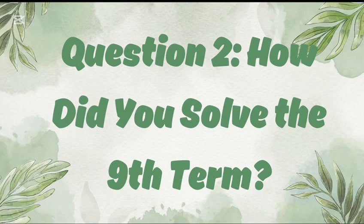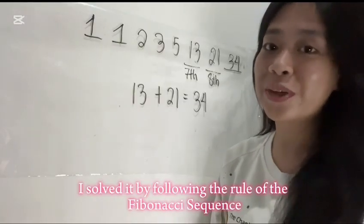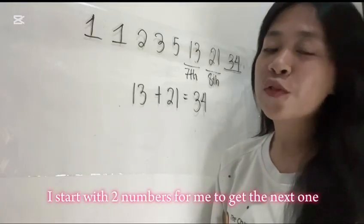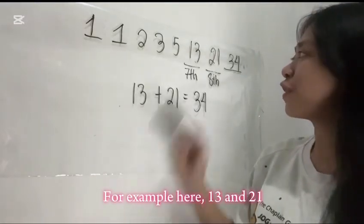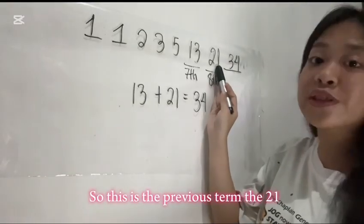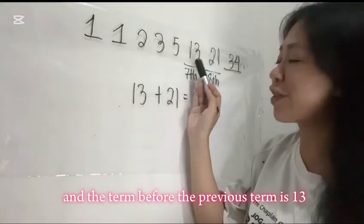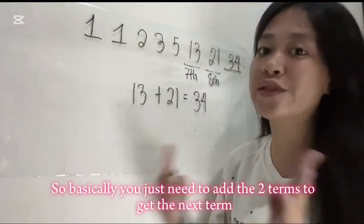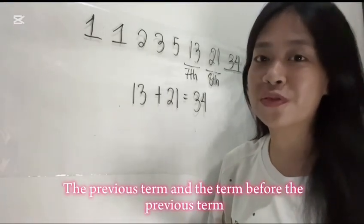Question number 2. How did you solve the ninth term? I solve it by following the rule of the Fibonacci Sequence. I start with the two numbers to get the next one. For example, 13 and 21. This is the previous term, 21, and the term before the previous term is 13. Basically, you just need to add the two terms to get the next term.